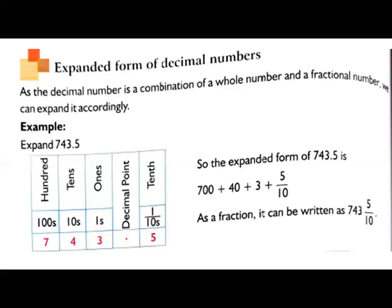So the expanded form is 700. That is 7 into 100, 700 plus 4 into tens, so 40 plus 3 into ones, so 3 ones are 3 plus tenth position. Decimal value. Tenth position. So 5 by 10. So this is how you have to expand a number.